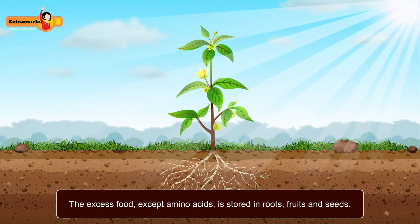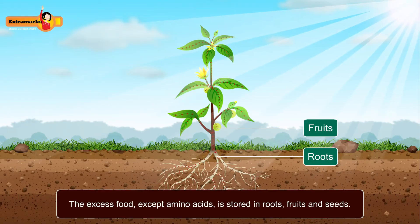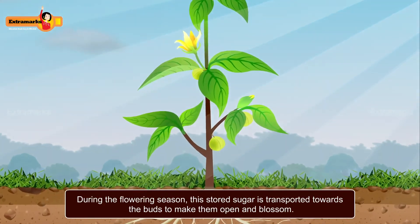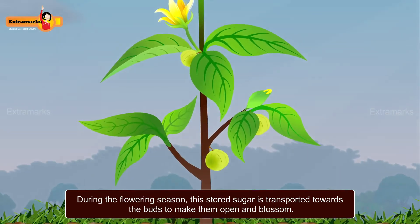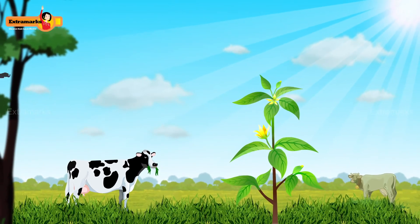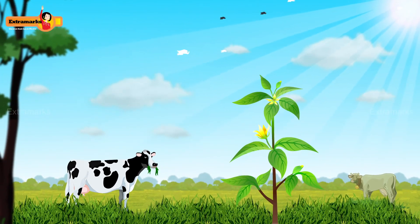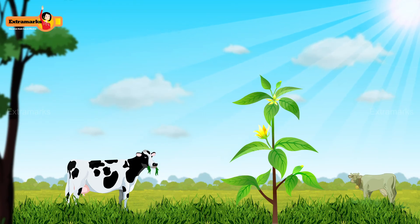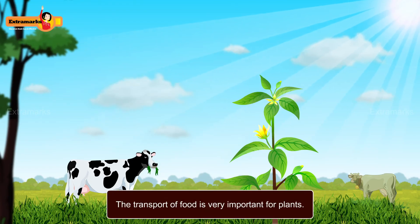The excess food, except amino acids, is stored in roots, fruits, and seeds. During the spring season, this stored sugar is transported towards the buds to make them open and blossom. Plants need food for various metabolic activities and heterotrophs are dependent on them for their food. Thus, transport of food is very important for plants.